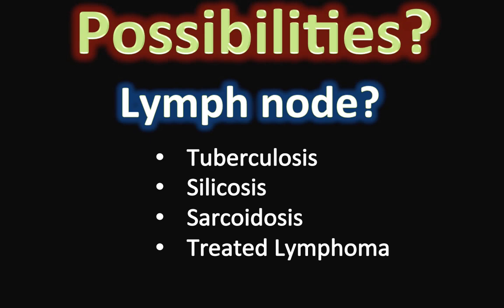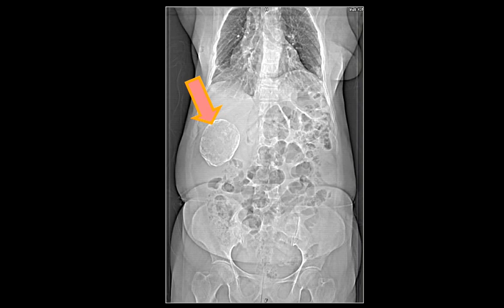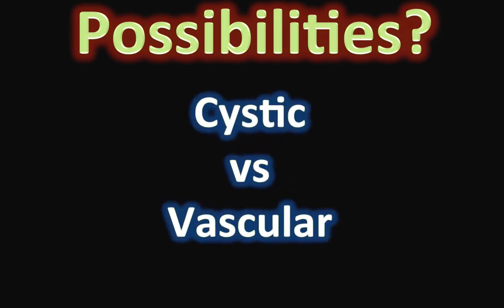A very rare cause of eggshell calcification would be amyloid deposition. However, the location of the abnormality, the large size, and the absence of other similar lesions would argue against a lymph node. So what could this be? Eggshell calcifications other than lymph nodes may be due to calcification of the shell of a cystic abnormality, or wall calcifications within a vascular abnormality such as an aneurysm.